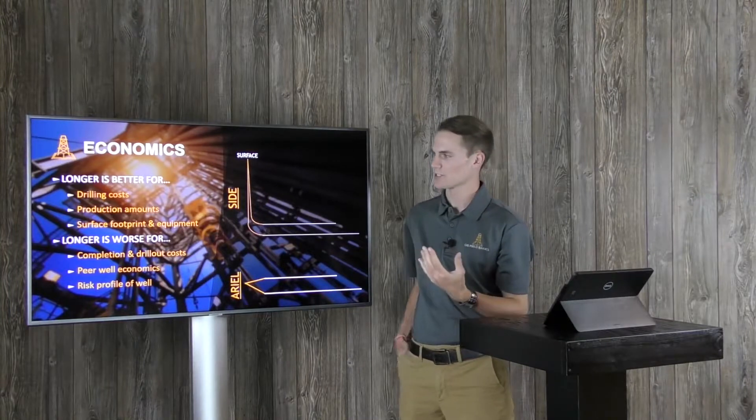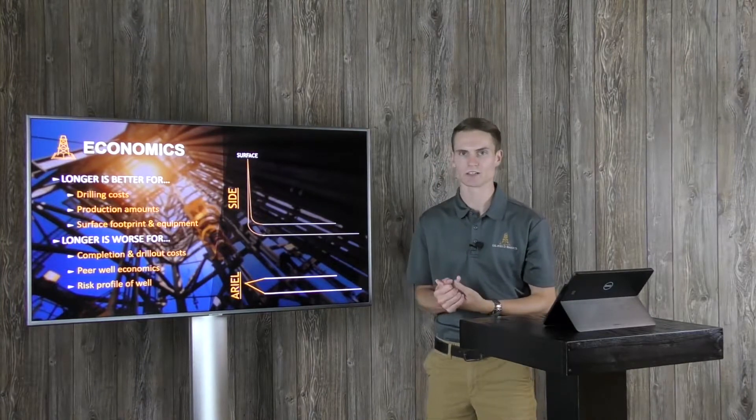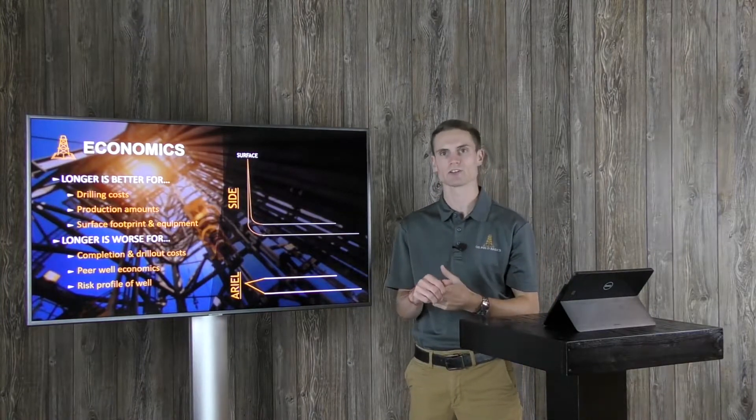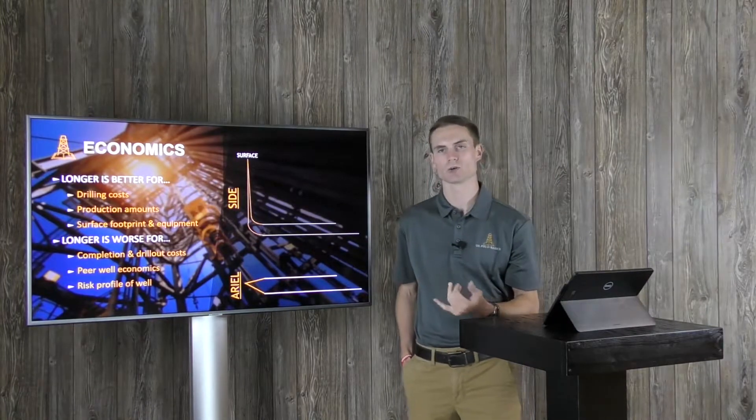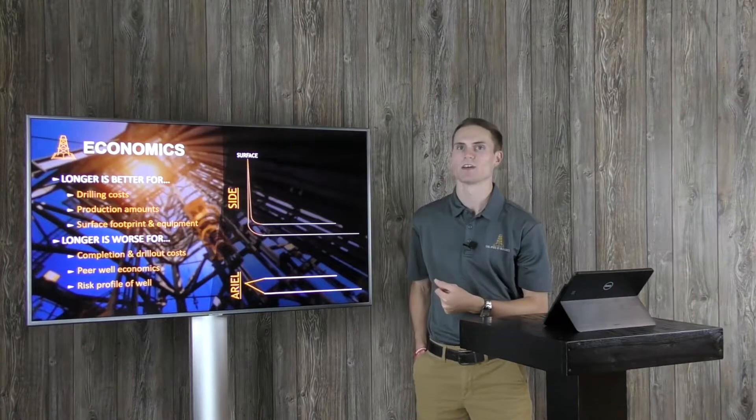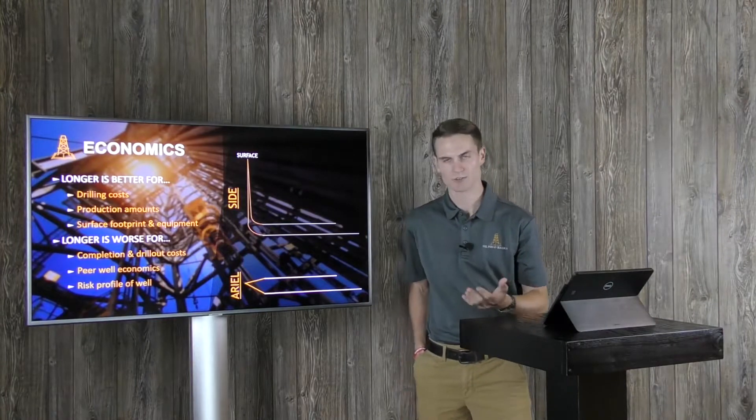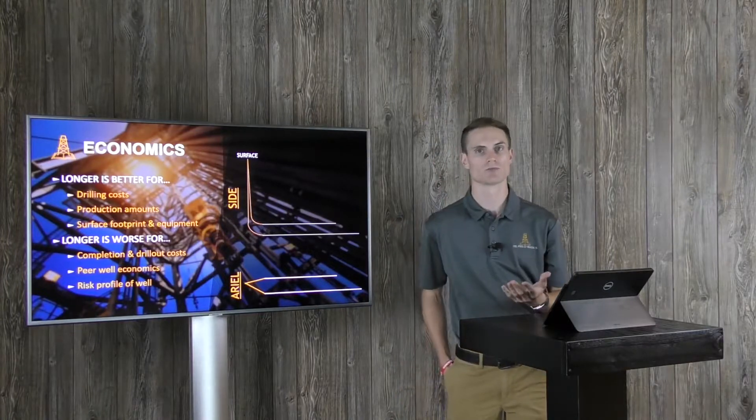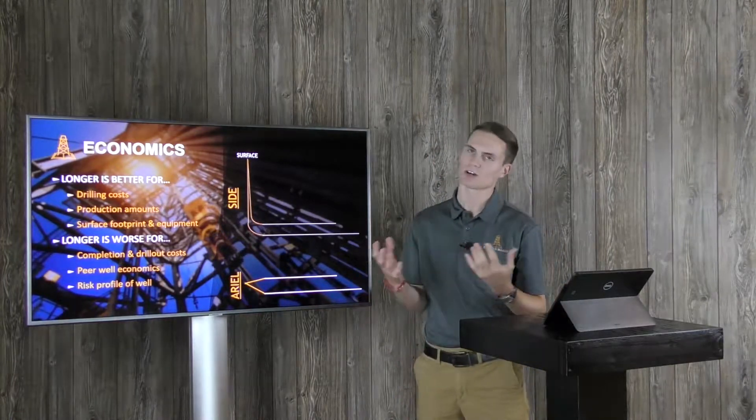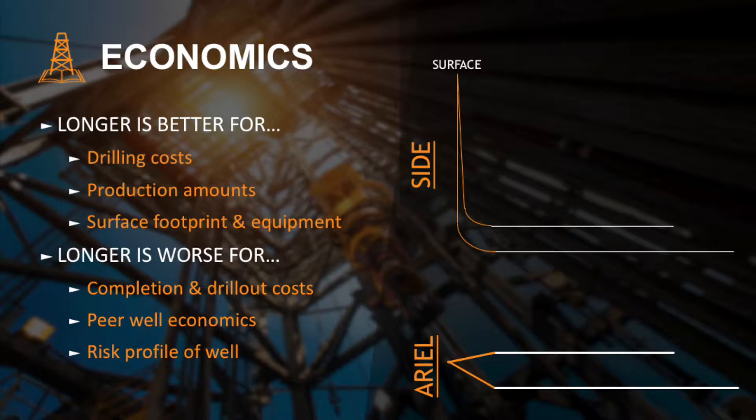Also the drill out cost. When you're typically using things such as coil tubing in some areas, when your coil tubing is your primary drill out method and you have a longer and longer well, you might not be able to reach coil tubing all the way to the end of that well. So that's going to increase your cost. You might have to bring in a workover rig and do a drill out with a workover rig, or you might have to run dissolvable frack plugs. Again, this all contributes back to cost.